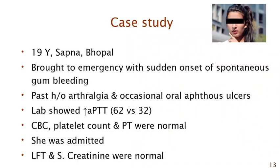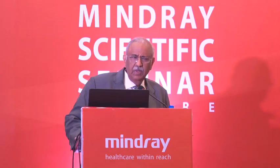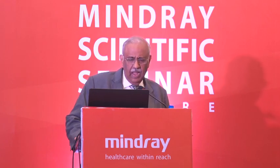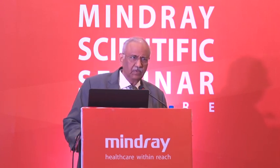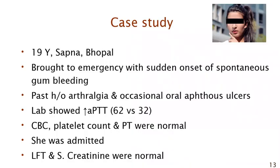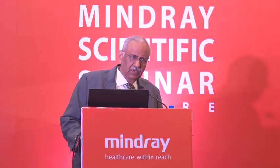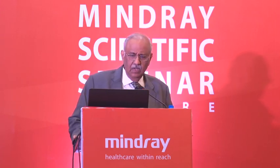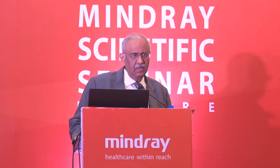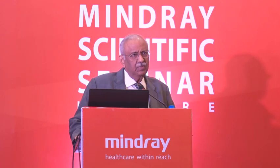She is a 19-year-old who hails from Gopal. She was brought to the emergency with sudden onset of spontaneous gum bleeding. There was some history of arthralgia and occasional oral ulcer episodes. Her lab workup showed that her activated partial thromboplastin time — essentially a test of the intrinsic pathway and common pathway — was high at 62 seconds versus a control of 32 seconds. Her blood counts were normal, her platelets were alright, and her prothrombin time was normal. She was hospitalized; liver function and kidneys were normal.